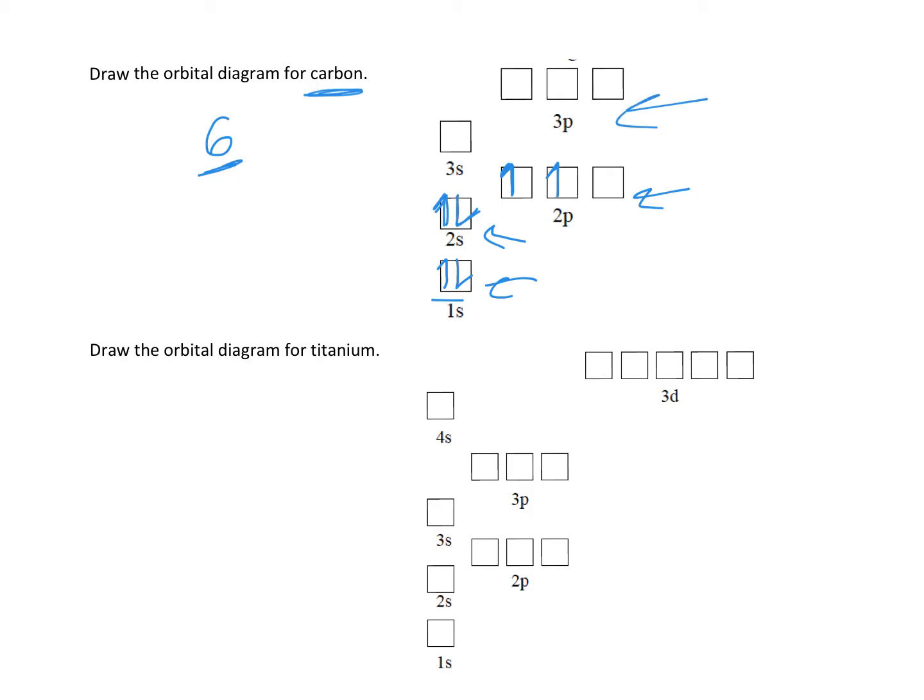These orbitals up here are empty. They exist as places the electron can go in an excited state, but what we're drawing are ground states, which is when they're at the lowest possible energy.